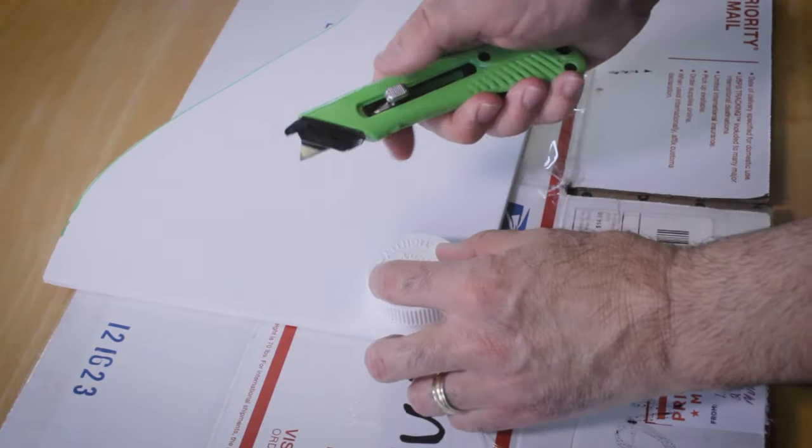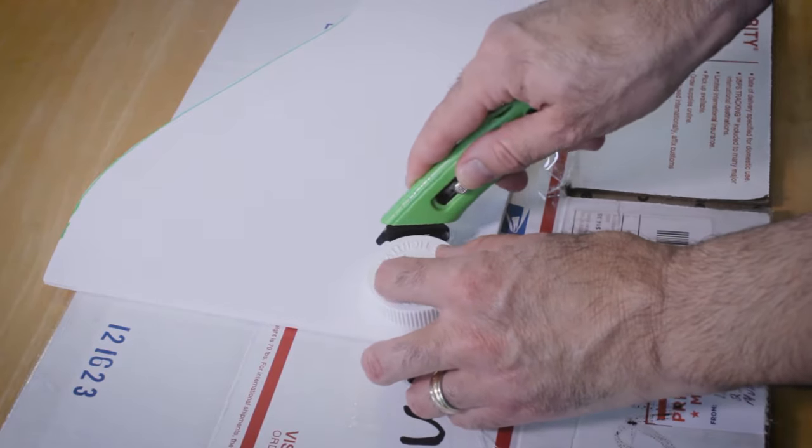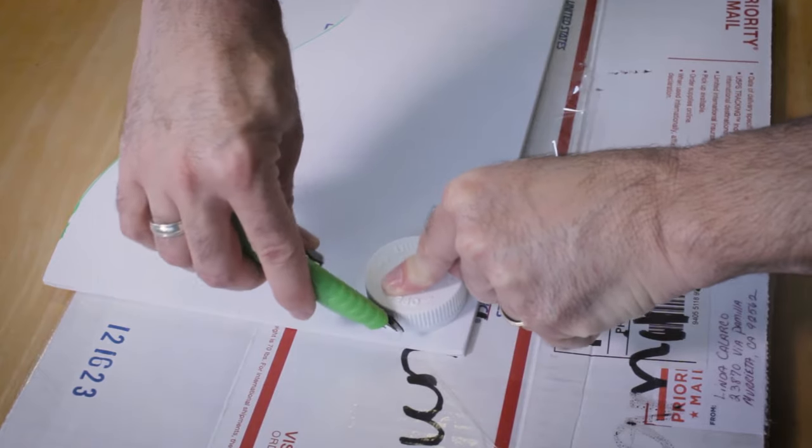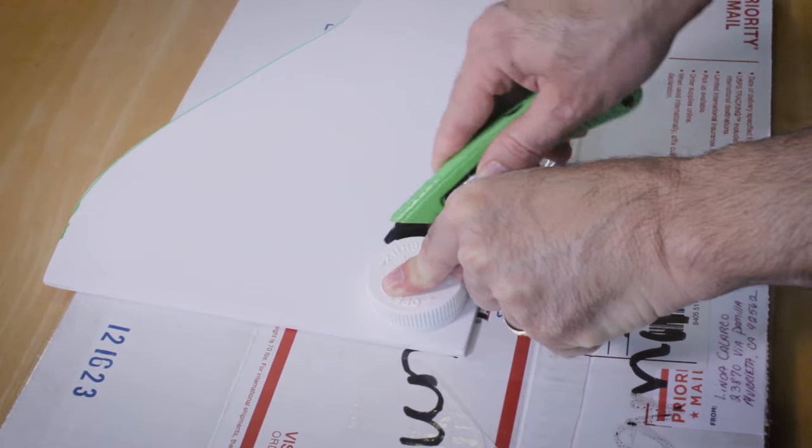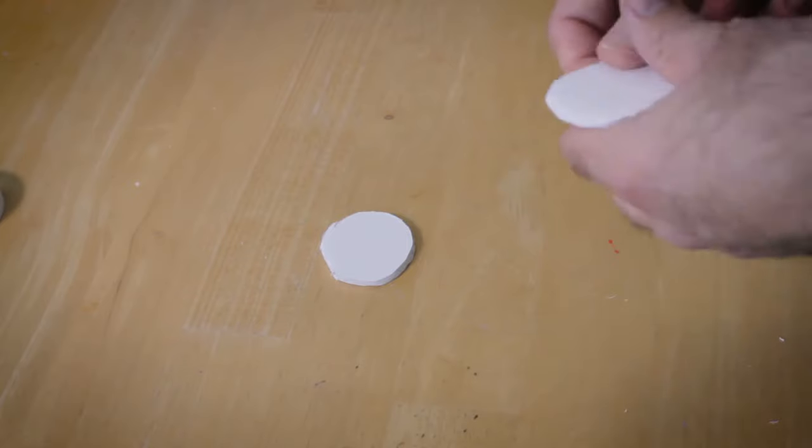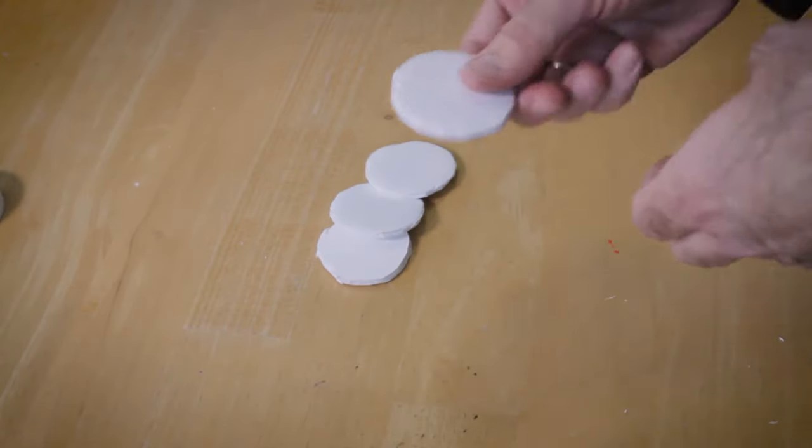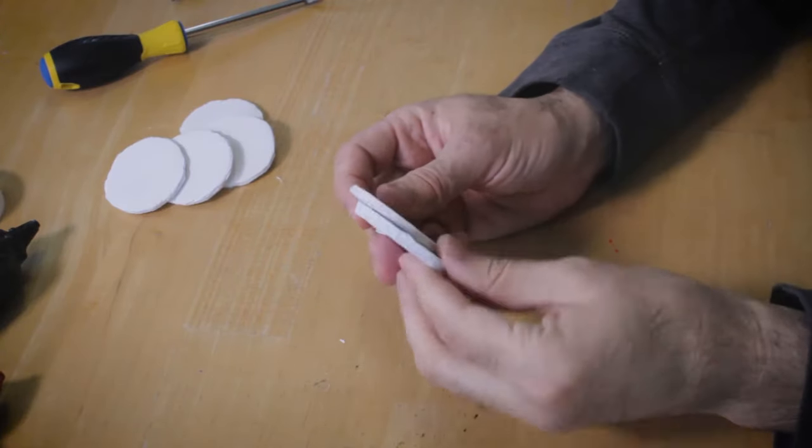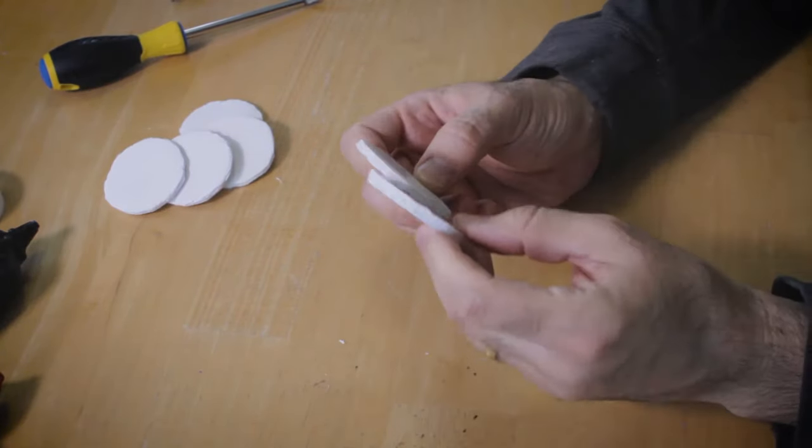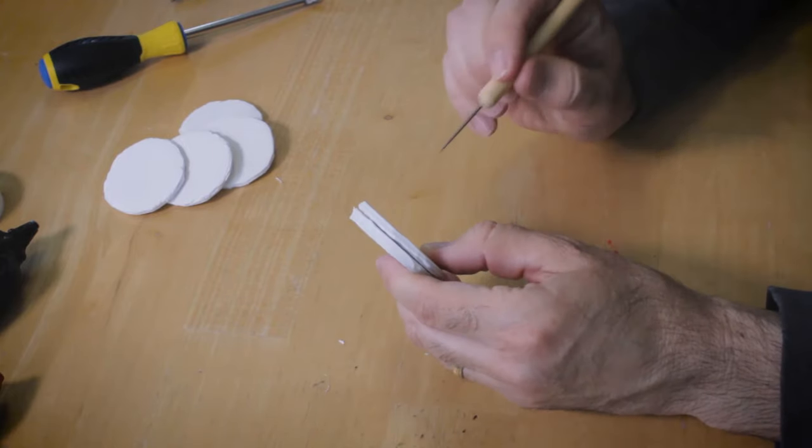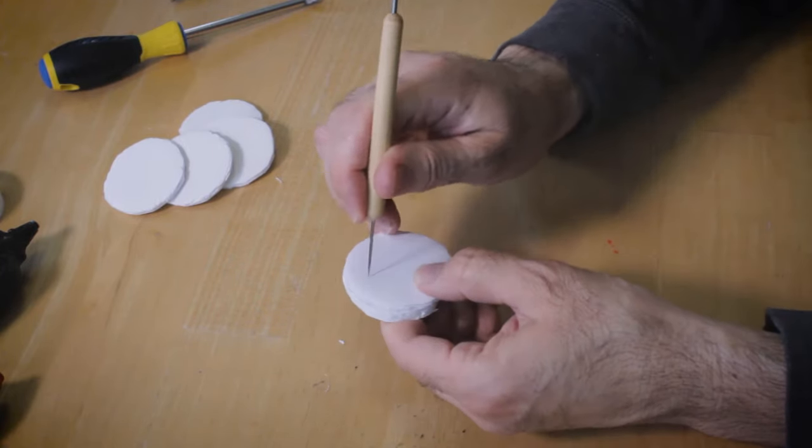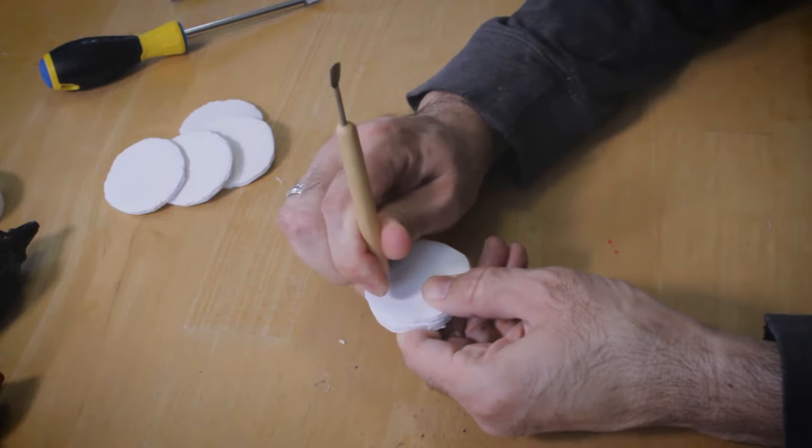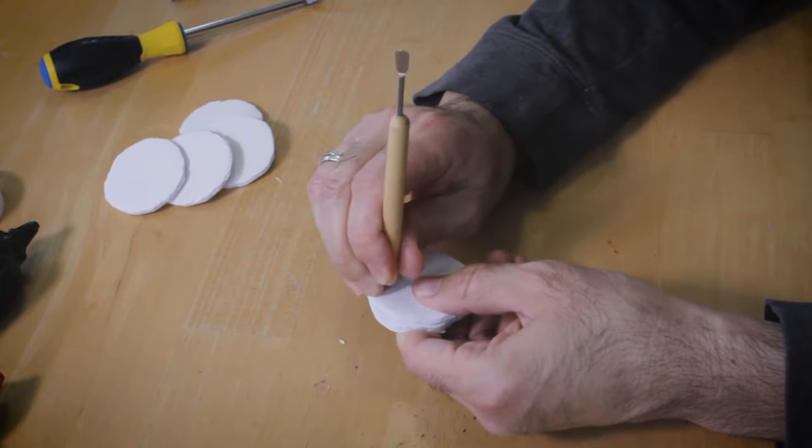So first of all I'm going to start by cutting out a circular shape about the size of a vitamin pill lid. So get a nice circle. I'm going to cut six of those. So we've got two, three, four, five, six. So I'm going to take two of them and we're going to start poking some holes in them. I'm going to poke four holes kind of opposite of each other.